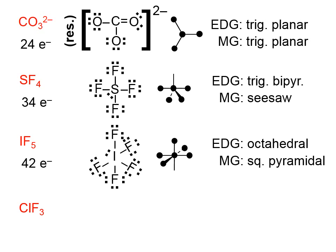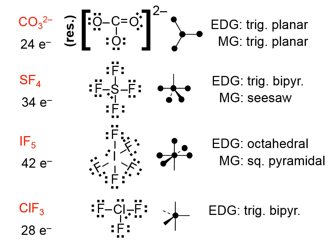ClF₃ — again, these are all halogens, so there are 28 electrons (seven times four). If we complete the octets around all atoms, that's 26 electrons, so we need two more added to the central atom. That gives an electron domain geometry of five — trigonal bipyramidal. There are three bonding domains. With trigonal bipyramidal, atoms go axial first, and then extra atoms go equatorial. That's why this molecular geometry is T-shaped.